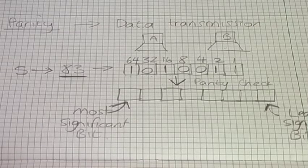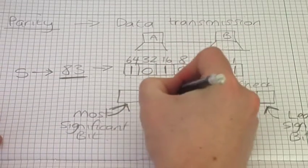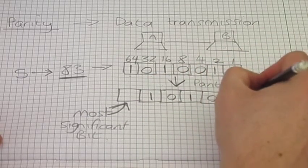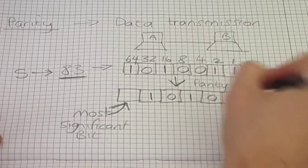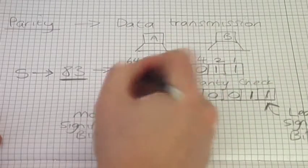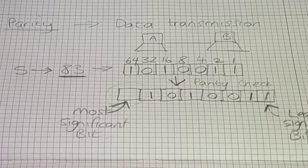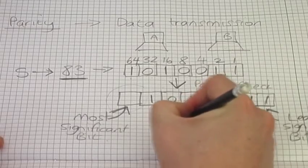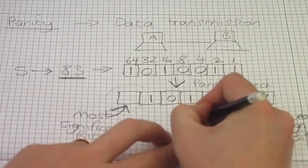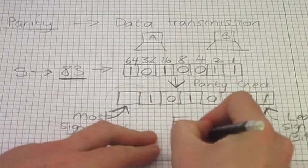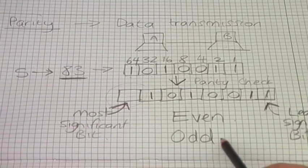My seven bits of data are going to go into the remaining spaces, with the most significant bit position reserved for my parity bit. There are two types of parity, and they're very similar with just one small difference — hopefully you'll work that out from the name. We can either use even parity or we can use odd parity.